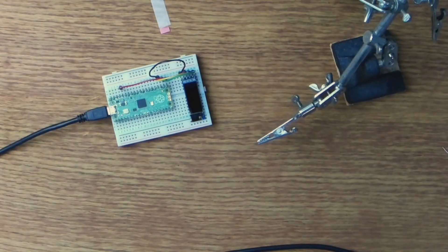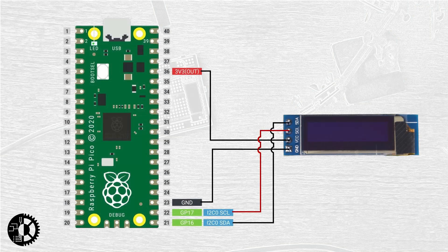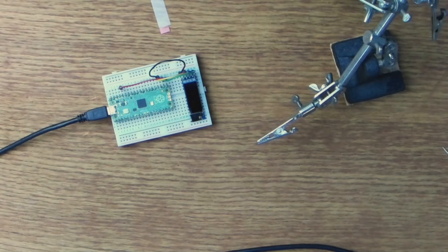Today I have the I2C version and I'm wiring it up to the Pico's first I2C interface as follows. The SCL or clock line is connected to GPIO pin 17, physical pin 22. The SDA or data line is connected to GPIO pin 16, physical pin 21. The ground connection is at physical pin 23 on the Pico, and finally the VCC or voltage line is connected to the Pico's 3.3 volt output at physical pin 36. And that's it — this is a very simple module to wire up.